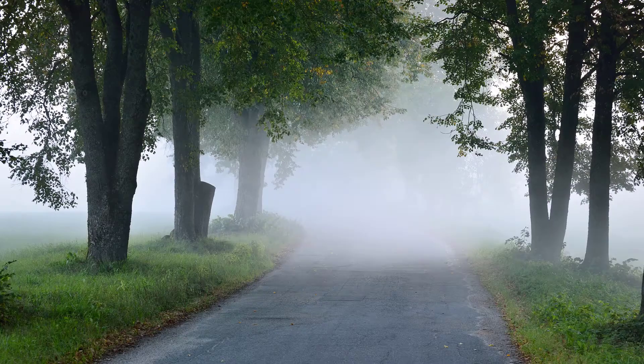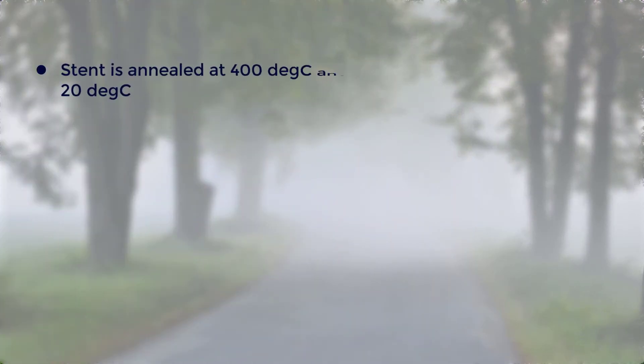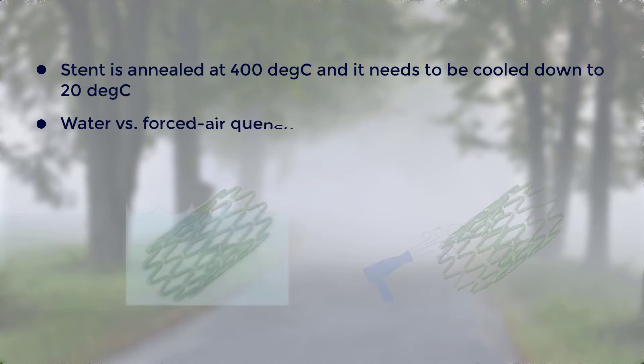Let's perform the quenching process on the stents using transient thermal analysis. In this problem, we'll assume that the stent has already been annealed at 400 degrees Celsius and is to be cooled down to room temperature at 20 degrees Celsius. For the quenching process, we'll compare the use of two different fluids: water and forced air. We'll try to understand the factors affecting heat transfer and see how it is a time-dependent process.